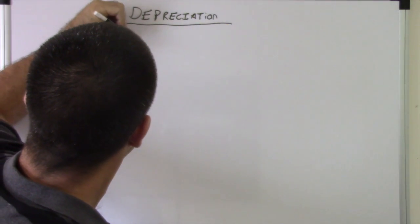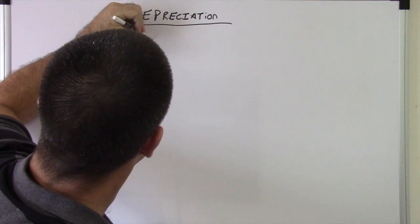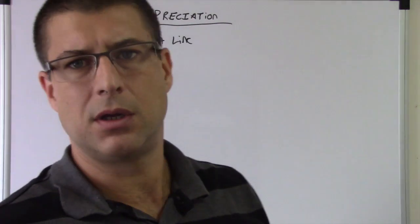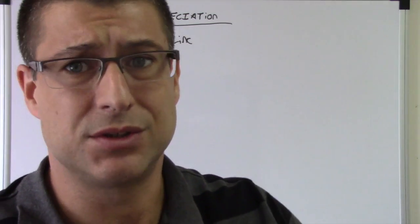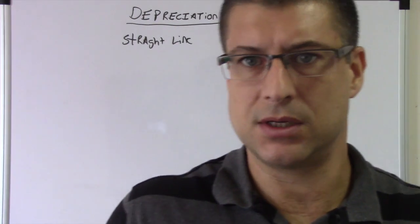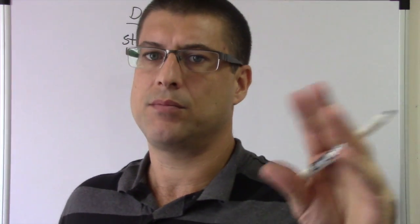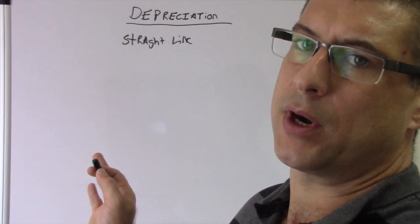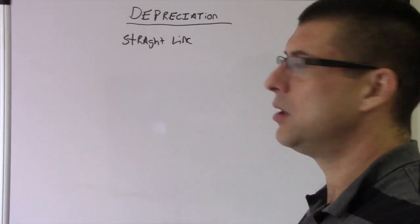We're gonna do straight line depreciation. There's straight line, there's sum of the digits, there's double declining balance, there's one and a half times declining balance, and all that. But for purposes here, we're gonna do straight line.